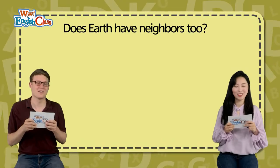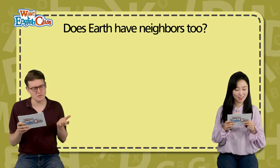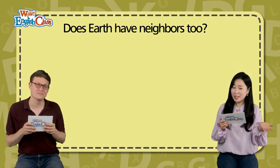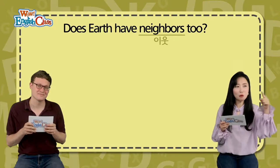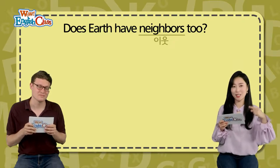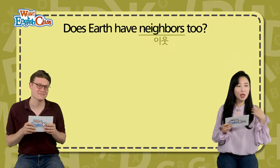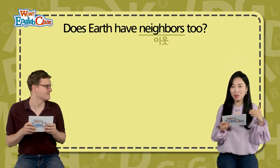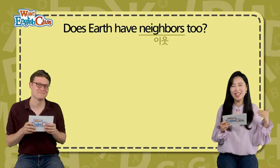All right. The first sentence: Does Earth have neighbors too? Does Earth, 지구가, have neighbors? 이웃이 있나요? 지구도 이웃이 있나요? 라는 내용이죠. 우리에게도 이웃이 있잖아요. 지구도 이웃 사촌이 있을까요? 서로 왕래하고 지내는?